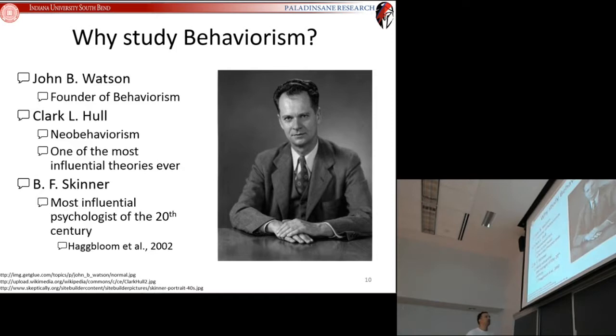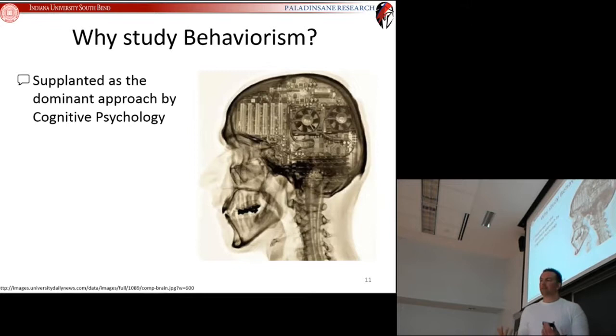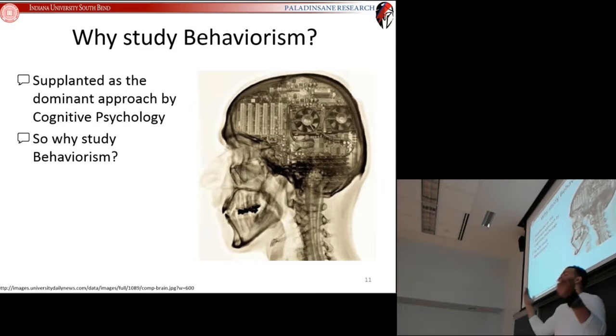Our final piece of history: B.F. Skinner, considered the most influential psychologist of the 20th century. Usually if people can name one psychologist other than Freud, Skinner is the next guy. We're going to see a lot of his work when we take a look at operant learning. But behaviorism isn't the dominant approach to psychology anymore. It got supplanted by cognitive psychology.